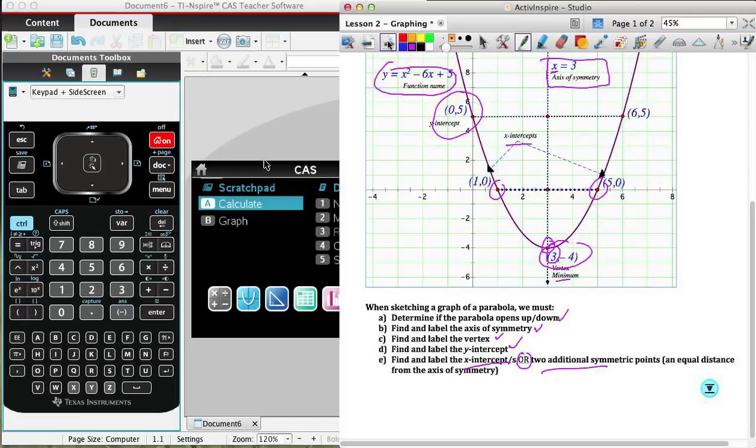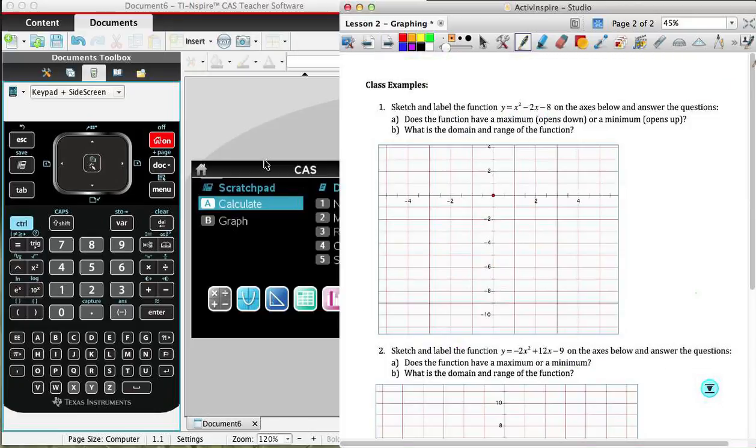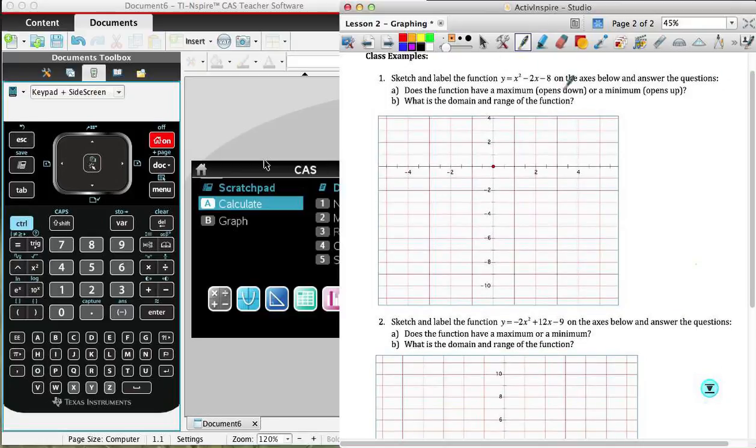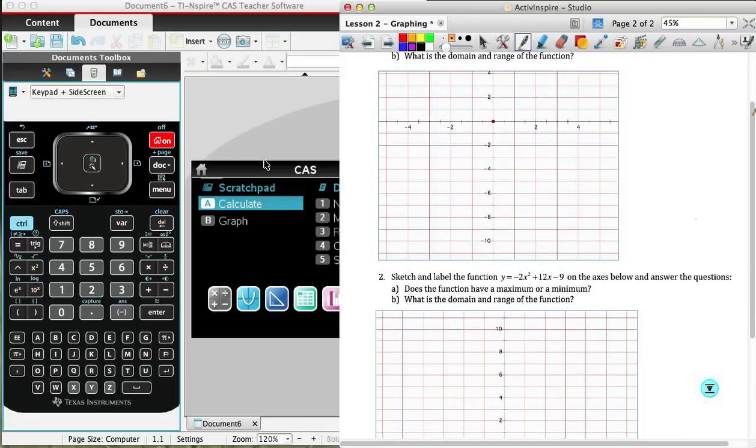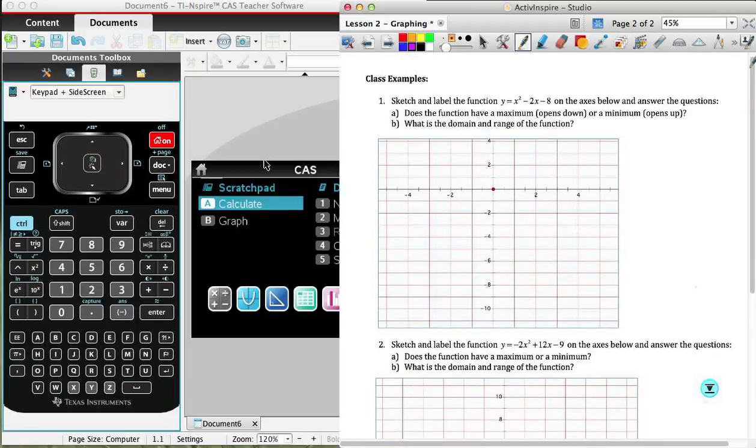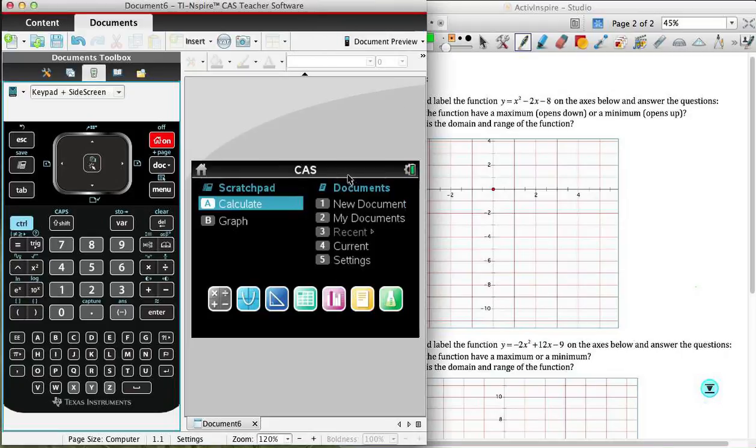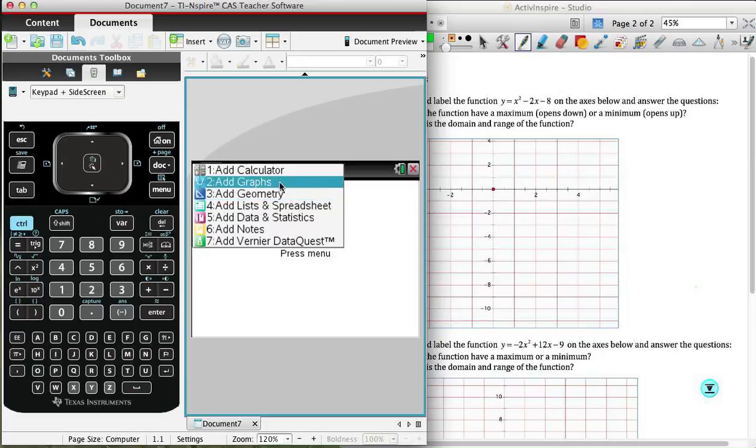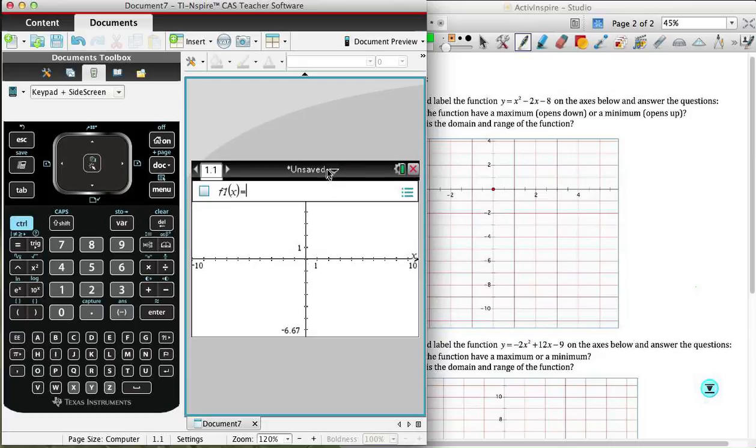Okay. And so what I'm going to do is go ahead now to the example page. And I'm going to take you through example one using the calculator and then give you an opportunity to attempt number two. Okay. So let me go over to the calculator. We're going to start on the home page. I'm going to create a new document and add a graph. And the graph that I want to add is, of course, the x-squared minus 2x minus 8.